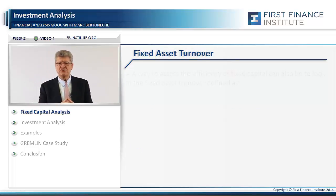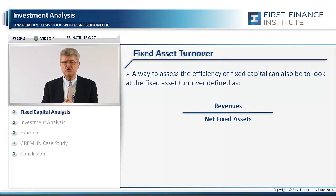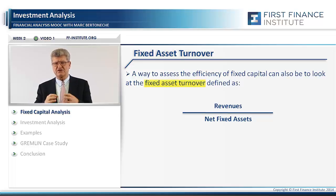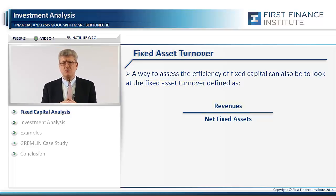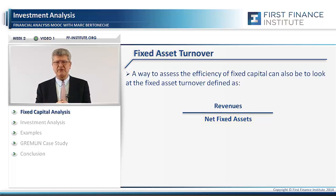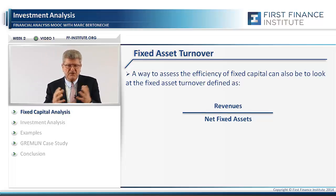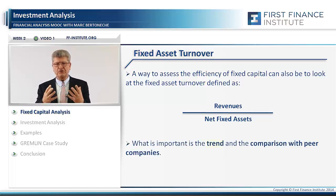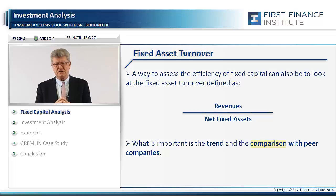Another simple ratio to assess the efficiency of fixed capital is the so-called fixed asset turnover. It is simply equal to revenues divided by net fixed assets — in other words, how much revenue the company generates per dollar of net fixed assets. More than the number itself, which is sometimes not very meaningful, what is important is the trend through time and the comparison with peer companies, if you can find some.